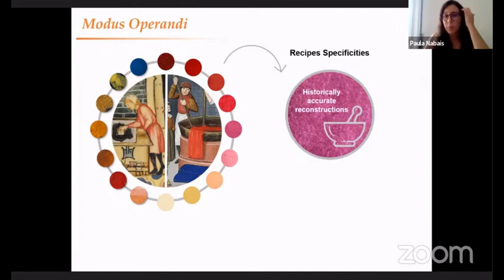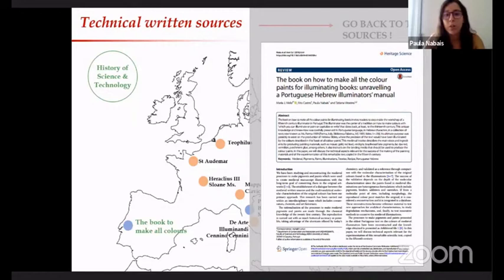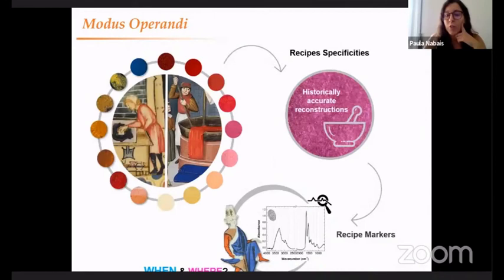So if we go after these recipes and their specificities, we can start to produce historically accurate reconstructions. This is just like being in the kitchen - we have a recipe and we prepare all of these dishes. We go after historical sources, recipe books, and medieval treatises that really tell us how these colors were prepared. After we prepare these colors according to these recipes, we go after recipe markers - the fingerprints using our multi-analytical approach that can really help us identify not only the source, but within the source a specific recipe. This can give us so much information on when and where a specific artwork was produced.